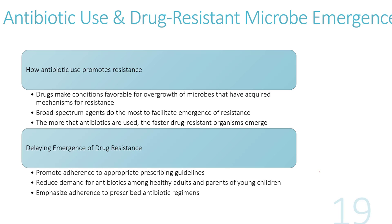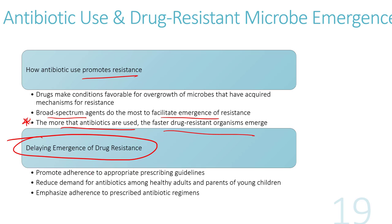Antibiotic use promotes resistance. Broad spectrum drugs do the most to facilitate resistance, and the rule of thumb is that the more antibiotics are used, the faster resistant strains emerge. To delay resistance, patients must follow appropriate prescription guidelines, prescribing should be reduced for otherwise healthy individuals, and patients must complete the entire course of antibiotics rather than stopping halfway through.